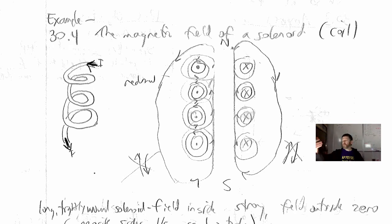In this cross section, we've sliced through the middle of the solenoid so we can see that the current right here — this is I — goes into the page on one side, goes around the back of the coil, and comes out the other side. These are all just different current loops of the coil.